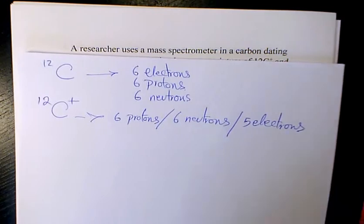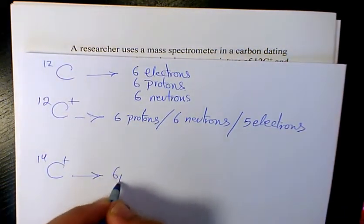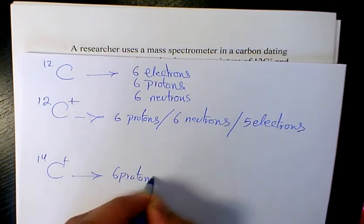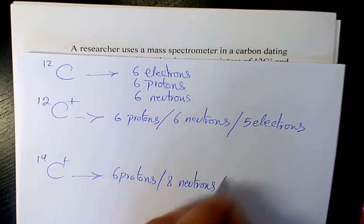On the other hand, C14+ has 6 protons, 8 neutrons, and 5 electrons.